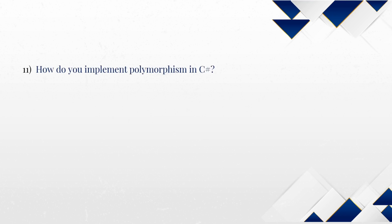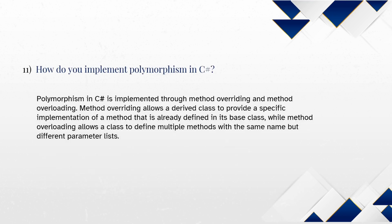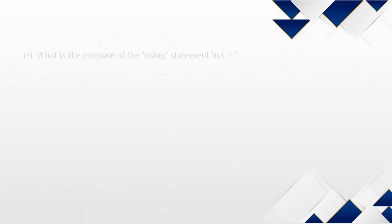How do you implement polymorphism in C-Sharp? Polymorphism in C-Sharp is implemented through method overriding and method overloading. Method overriding allows a derived class to provide a specific implementation of a method that is already defined in its base class, while method overloading allows a class to define multiple methods with the same name but different parameter lists.